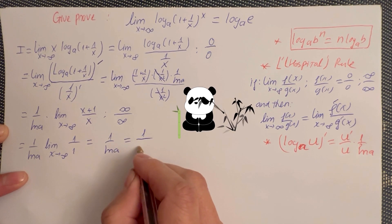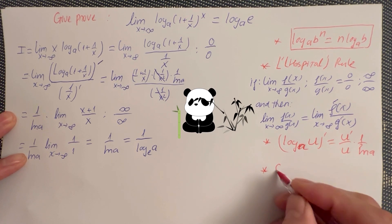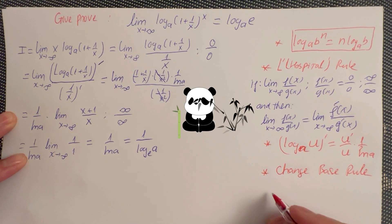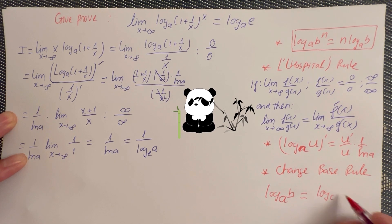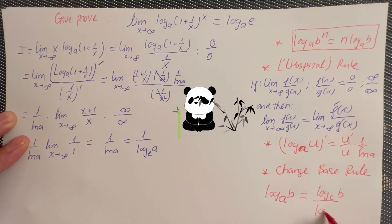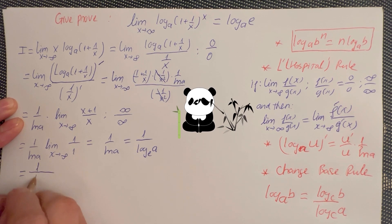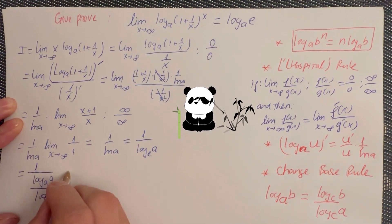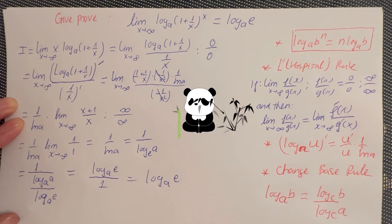You can rewrite 1 over ln A as log base e of A. Now use the change of base rule: log A of B equals log C of B over log C of A. Applying that, you get 1 over log A of A, and since log A of A equals 1, that gives you log A of e.